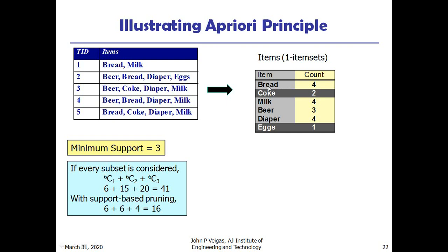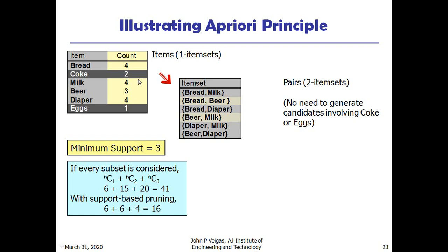After pruning, the one item sets become Bread, Milk, Beer, and Diaper. From these we generate two item set pairs: Bread-Milk, Bread-Beer, Bread-Diaper, Beer-Milk, Diaper-Milk, and Beer-Diaper. We then need to compute the support count for each pair.